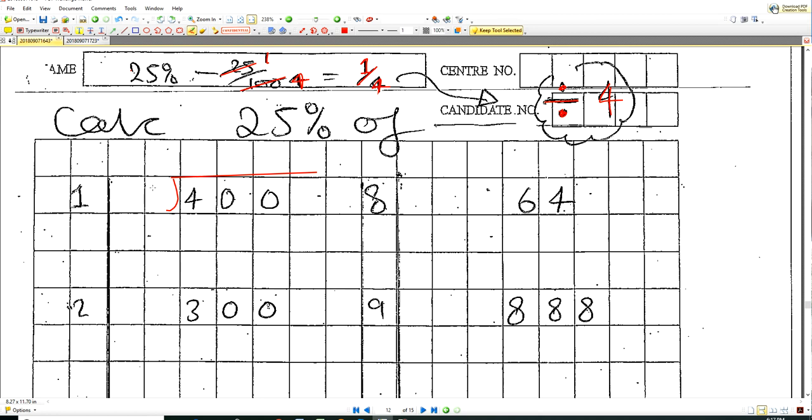So here we go. If I want to work out 25% of 400, I divide it by four. So how many fours in four is one, fours in zero is zero, and fours in zero is zero again. So 25% of 400 is 100, and it's as simple as that.